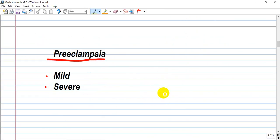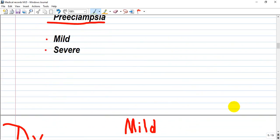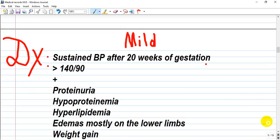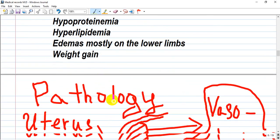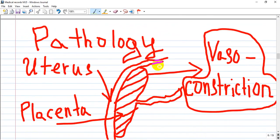Preeclampsia is classified by mild and severe. If we're talking about mild, it's sustained blood pressure again after 20 weeks of gestation and blood pressure is more than 140 systolic and 90 diastolic. But additional symptoms are proteinuria, hypoproteinemia, hyperlipidemia - it's relative hyperlipidemia because of decreasing protein level in the serum - also edemas from losing proteins in urine on the lower limbs and weight gain from edema.